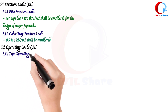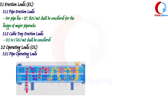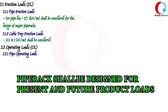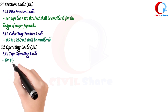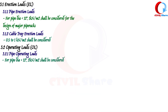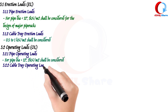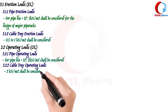Let's look into operating load. Pipe rack operating loads shall be defined as the gravity load imposed by liquid or viscous material in piping during operation. Pipe racks shall be designed for present and future product loads unless stipulated otherwise by client standards. For pipe diameter less than 12 inches, 2 kN/m² shall be considered. For cable tray operation loads, 2 kN/m² shall be considered.